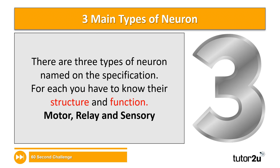Just a quick reminder here in terms of the specification — there are three types of neuron named on the specification. As I mentioned briefly in the last session, you could get a question on any of these. Remember, for each type — motor, relay, and sensory neurons — you have to be aware of their structure and also their function. Last session we covered the structure and function of a motor neuron, so here we're going to take a look at relay and sensory neurons.